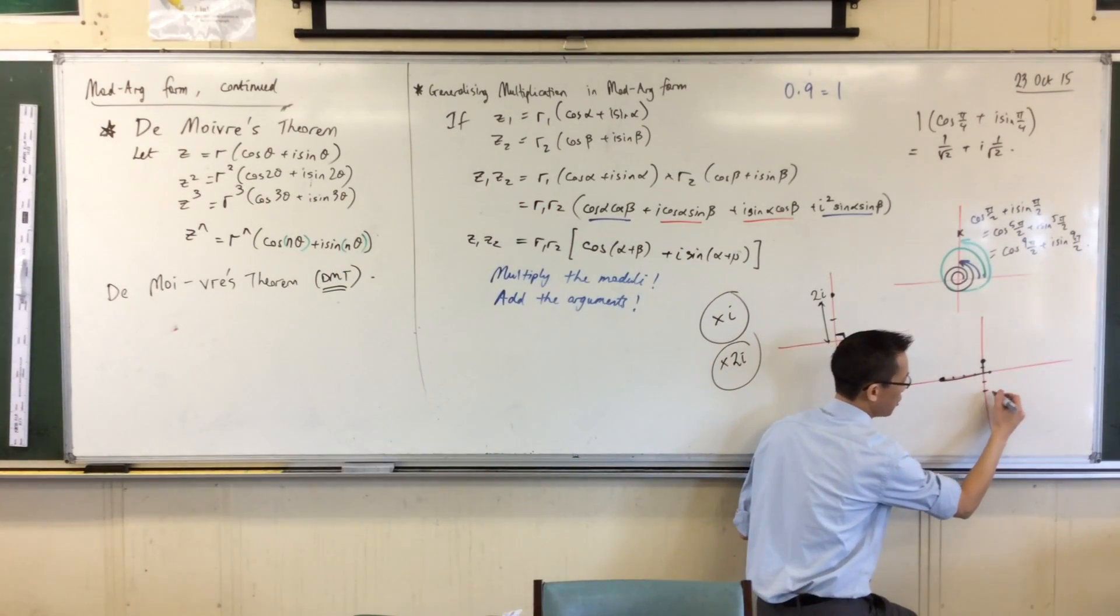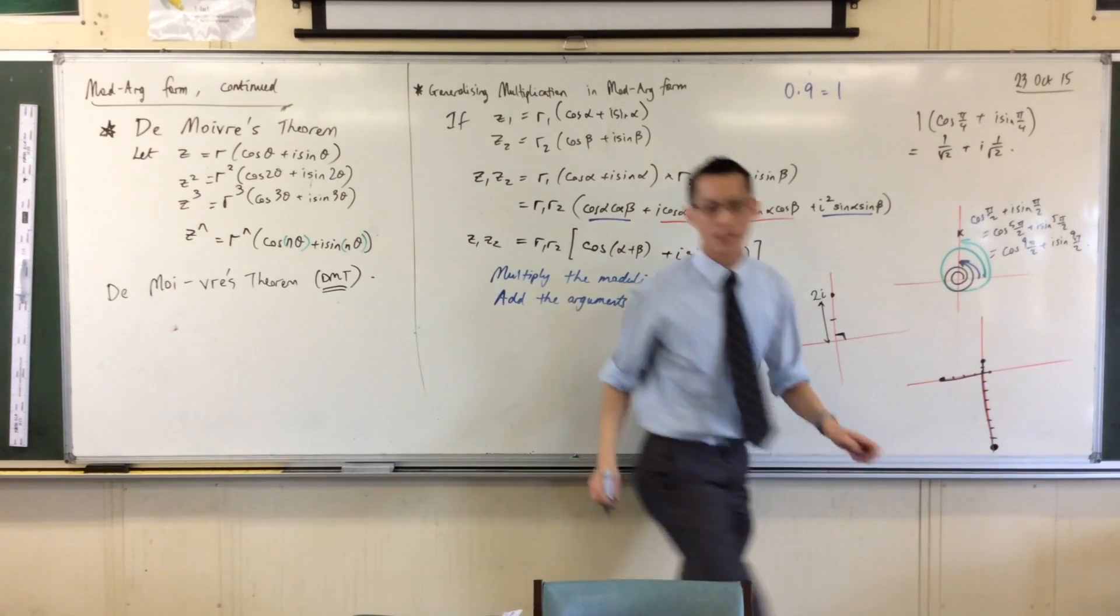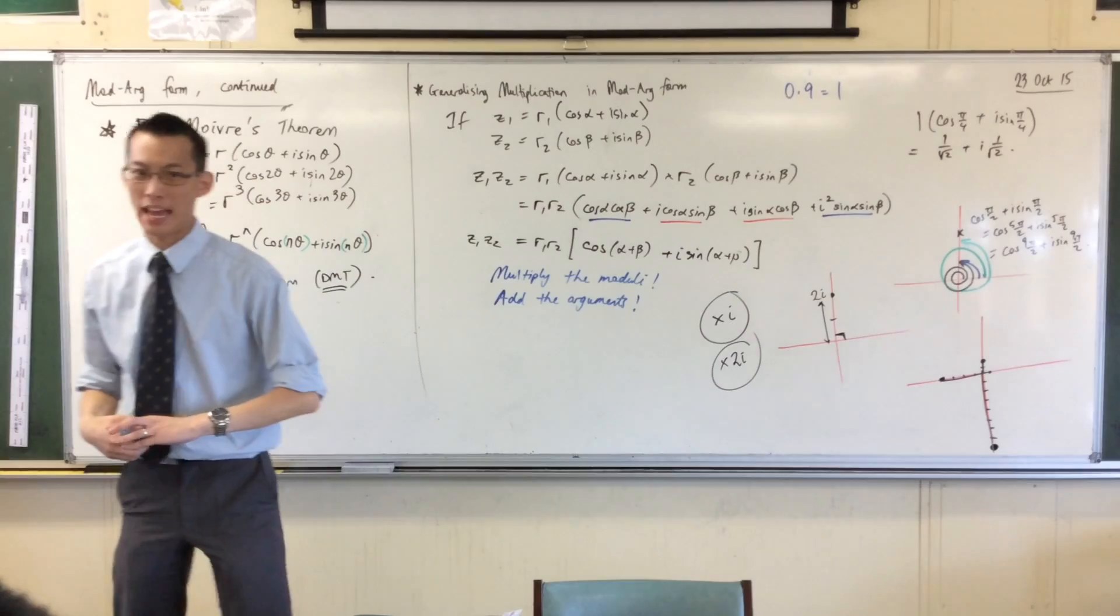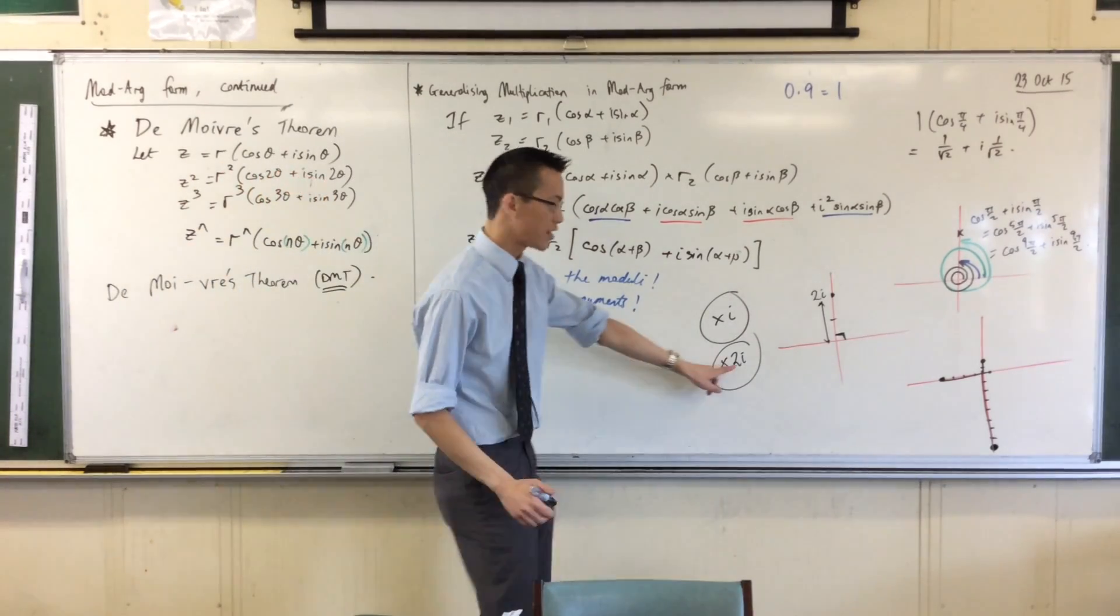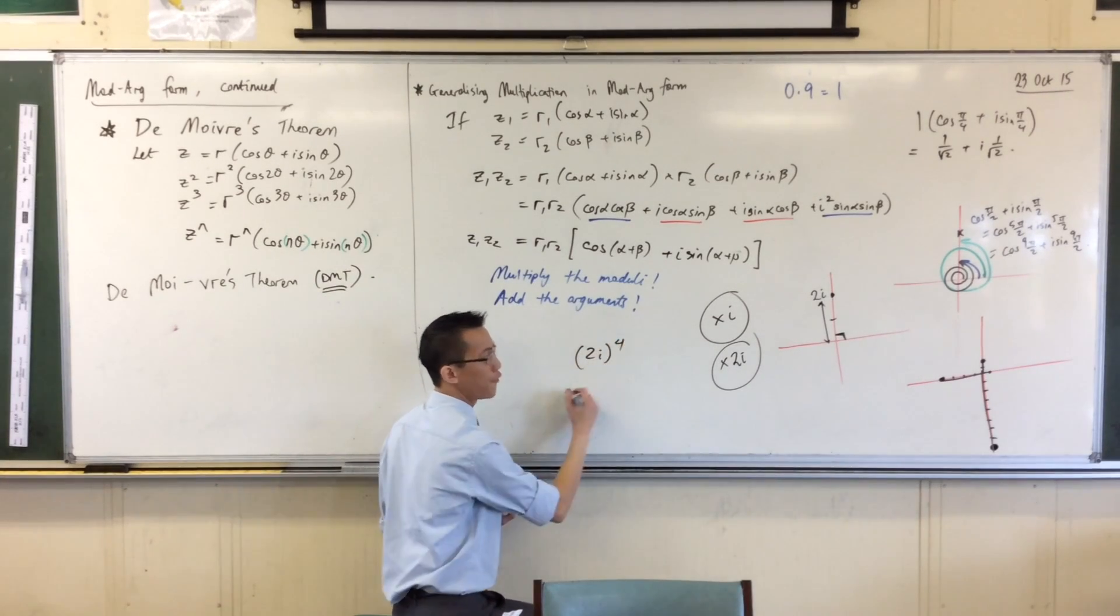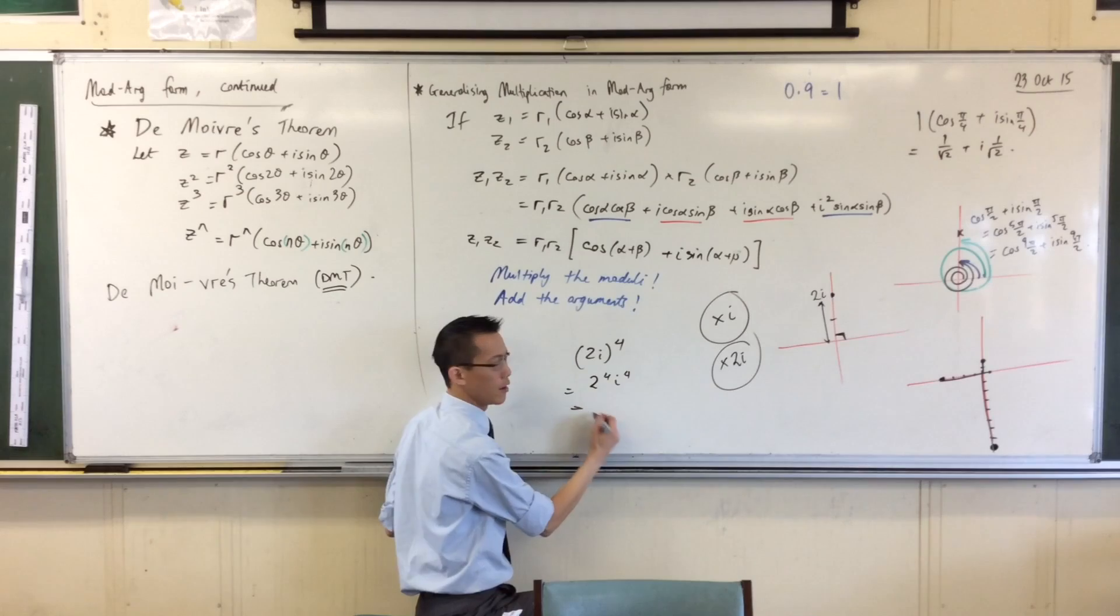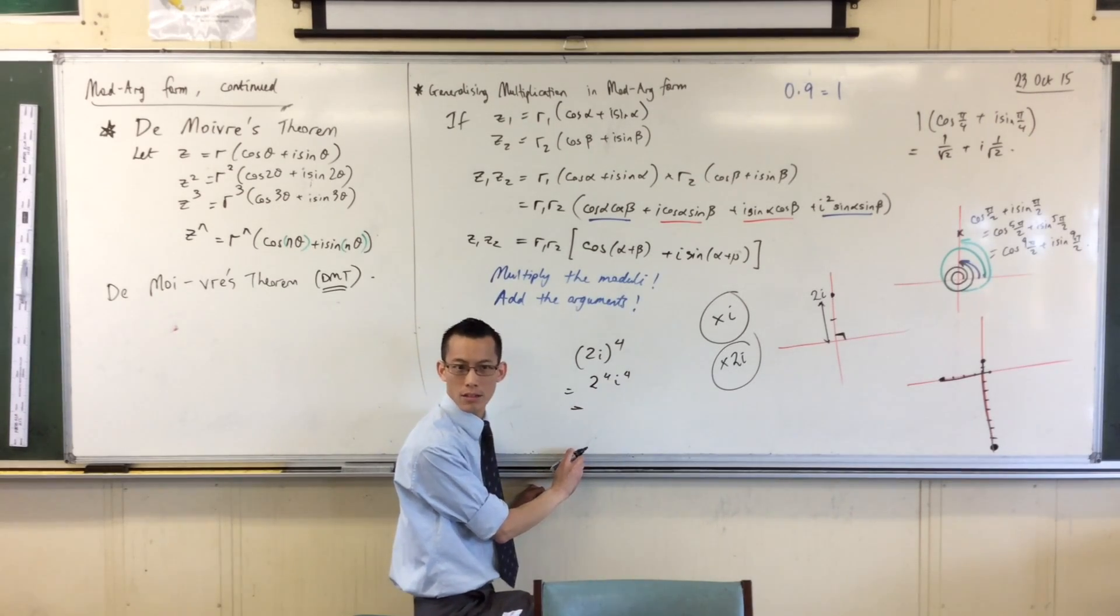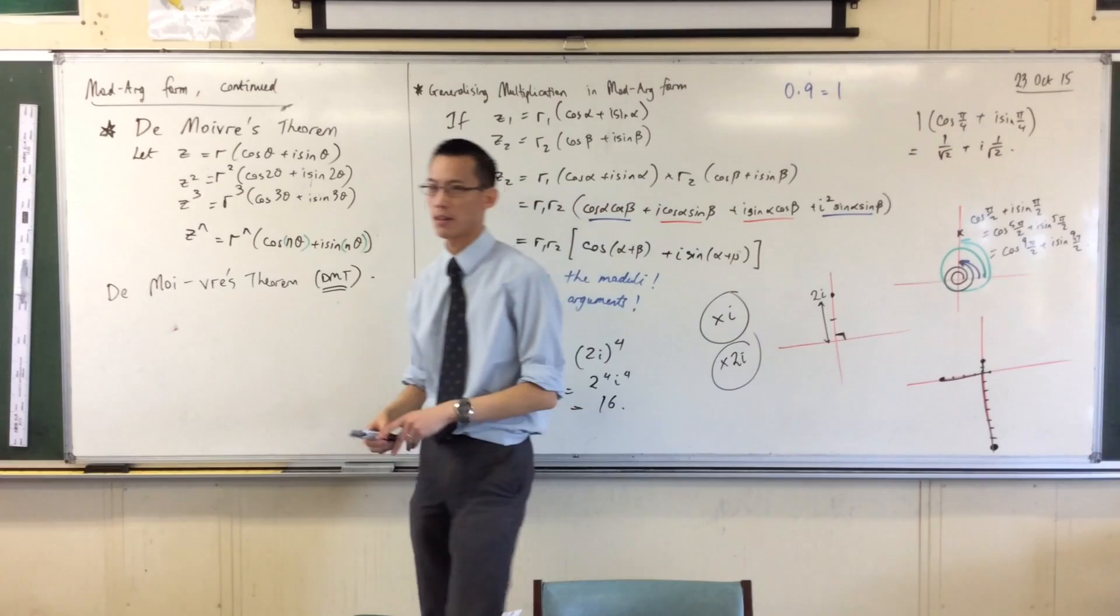What happens when I do my third multiplication? I'm going to be 1, 2, 3, 4, 5, 6, 7, 8, and I've rotated around another π/2 radians. If I multiplied one more time, because it's 2i, then 2i to the power of 4, of course, is 2 to the 4 times i to the 4. But you know what i to the 4 is. It's 1. So it's just 16 back on the real axis.